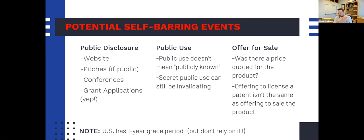I don't know how many times I've had people bring this up six months in and say, 'We're using the product, but nobody knows how it works — we keep all that hidden.' That doesn't really help you; that can be a problem. And then offers for sale — you sell the product or offer it for sale, that's a potential barring event. I want to be clear: I'm talking about the product, not the company. This doesn't stop you from getting investment dollars. The threshold for 'offering for sale' is a little squishy, but usually a dollar amount — if you're negotiating a price, that's offering for sale.